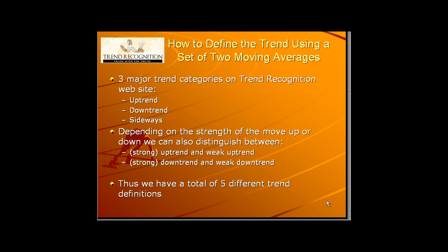If you've followed our site for some time, you know that there are five trend definitions on our website. First, the trend can be an uptrend, downtrend, or the market can move sideways. But depending on the strength of the move up or down, we can also distinguish between weak and strong uptrend and weak and strong downtrend. In total we have five different trend definitions: uptrend or strong uptrend, weak uptrend, sideways market, downtrend, and weak downtrend.